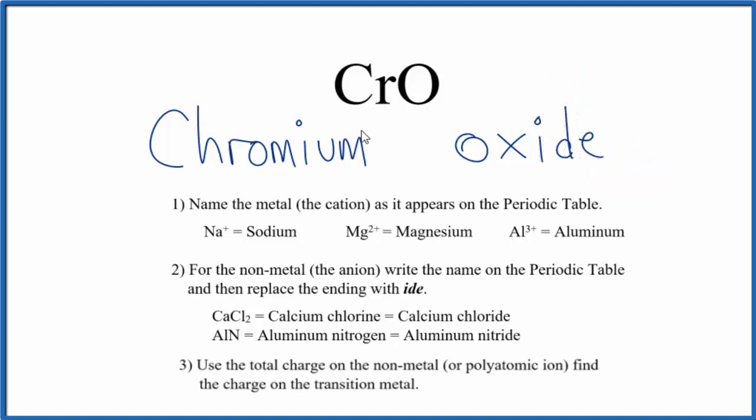So at this point, we have chromium oxide, but chromium, that's a transition metal. So it can have different charges depending on what it's bonded to.